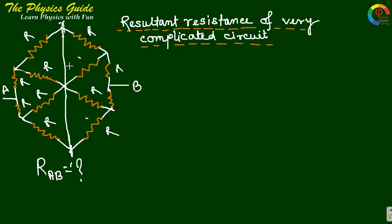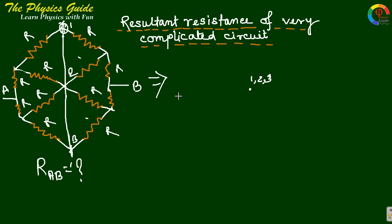To simplify, we can replace this resistance with a conductor — meaning there will be no resistance because there is no current through it, so it is not important whether it exists or not. We are just replacing this resistance with a straight line. Now suppose the points are labeled 1, 2, and 3. Points 1, 2, and 3 are connected through a conductor, so we can draw a simplified circuit where these three points become one point.